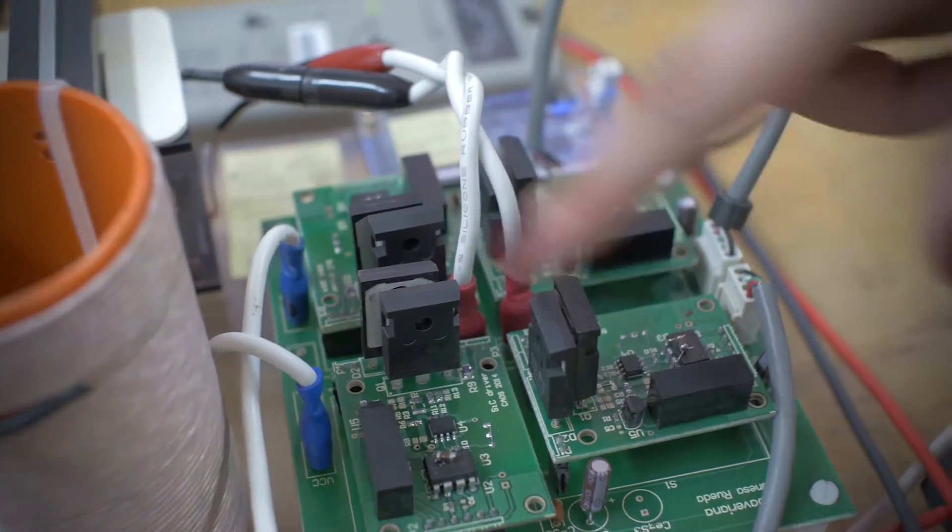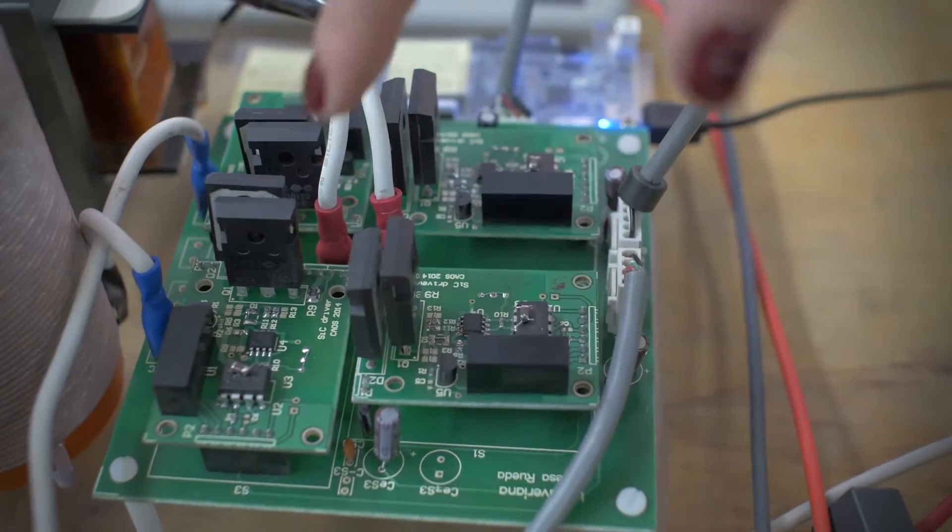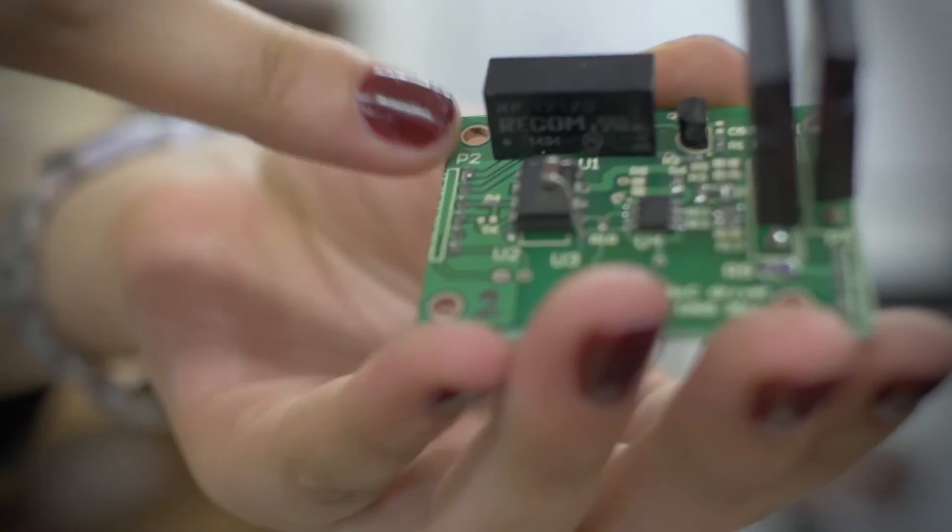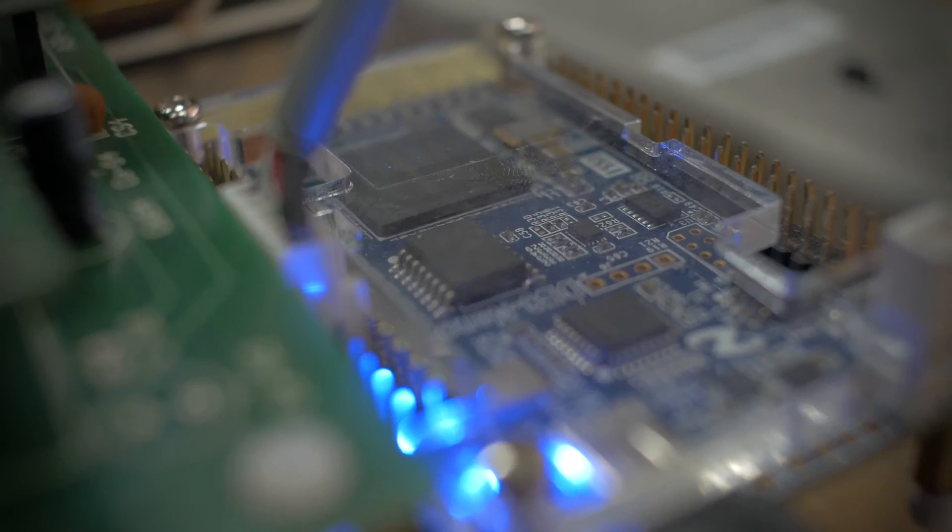The converter uses silicon carbide MOSFET diodes of 1200 volts switching at 150 kilohertz in a full bridge configuration. They are controlled by four gate drivers, which are powered by insulated power supplies. The control signals are generated using an FPGA DE0-Nano.